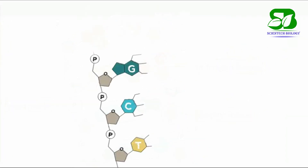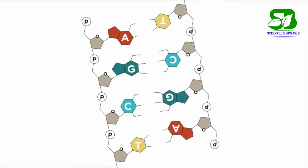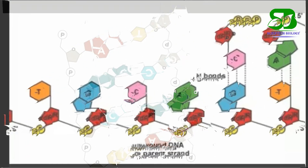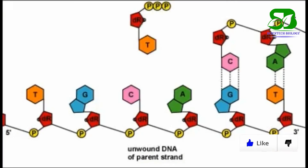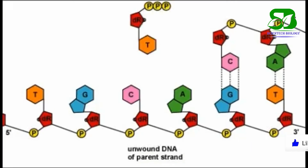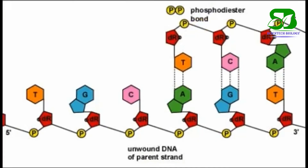Of the two polynucleotide strands, one is always complementary to the other — that is, adenine will always bond with thymine and guanine will always bond with cytosine. Adenine makes a double hydrogen bond with thymine, whereas guanine makes a triple hydrogen bond with cytosine.